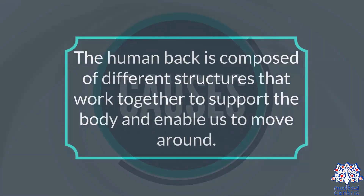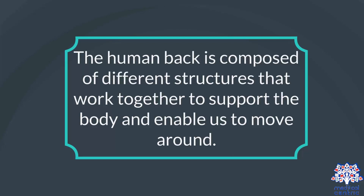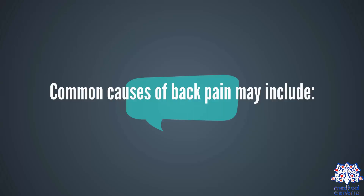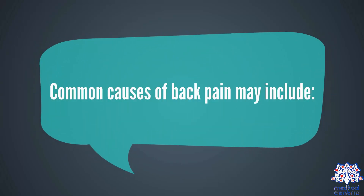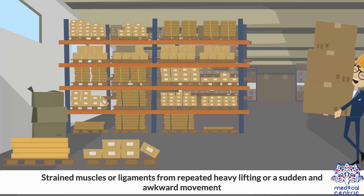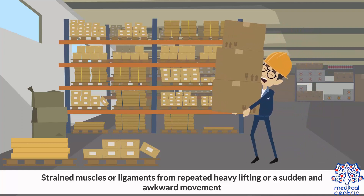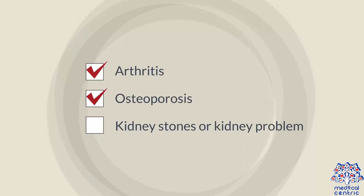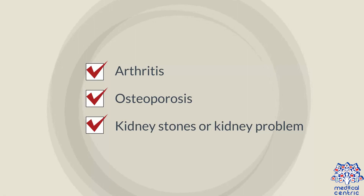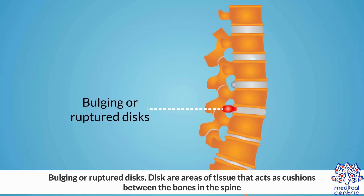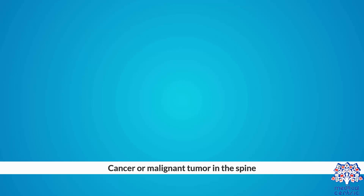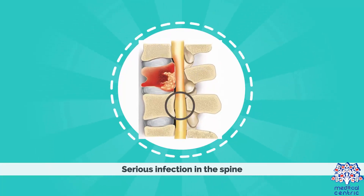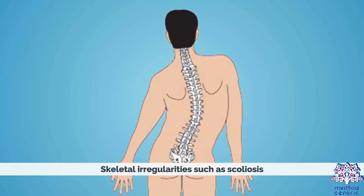Causes. The human back is composed of different structures that work together to support the body and enable us to move around. Problems with any of these can lead to back pain. Common causes of back pain may include strained muscles or ligaments from repeated heavy lifting or a sudden and awkward movement, injuries, fractures or falls, arthritis, osteoporosis, kidney stones or kidney problems, bulging or ruptured discs — discs are areas of tissue that act as cushions between the bones in the spine — cancer or malignant tumors in the spine, serious infection in the spine, and skeletal irregularities such as scoliosis.